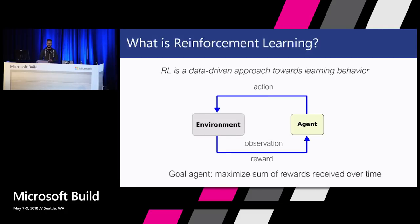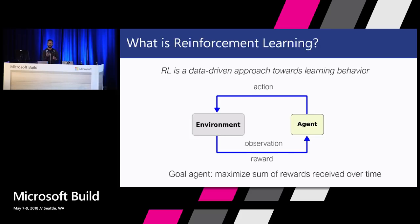So what is reinforcement learning? Reinforcement learning is a data-driven approach to learning behavior, and the agent learns this behavior by interacting with its environment. Here I have a high-level representation of the model where you have an agent and the environment. The agent takes an action within its environment and the environment responds back with what happened in the environment, an update in the state, as well as a reward for the agent. That reward is based on how good of an action it was — if it's a good action it gets a higher reward, and if it's a bad action it can lead to a zero reward or a negative reward.